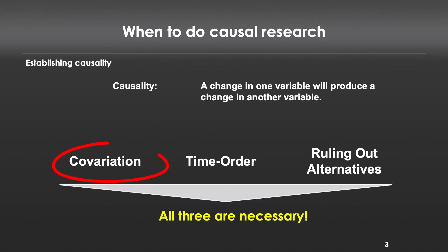The first is correlation — we need a relationship between variables to exist. If I change my price, sales have to change, or there can't possibly be a cause as a result of that change in price. Second, I need what's called time order. The thing I do has to temporarily precede the outcome. When dealing with experimentation, it's almost always the case that we have an action and then some outcome occurs afterwards, so we really don't think about this one too often.